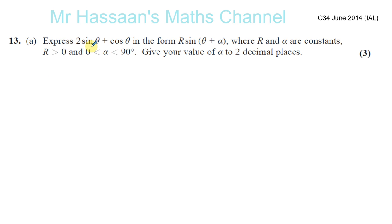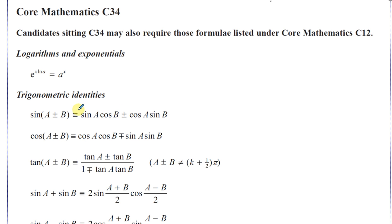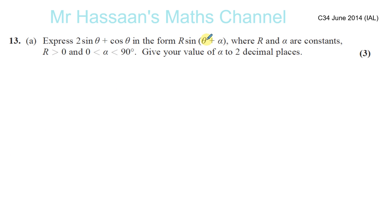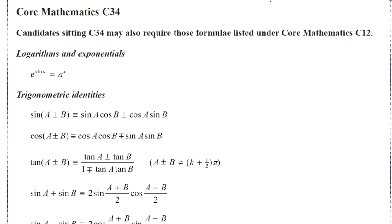Express 2 sine theta plus cosine theta in the form R sine(θ + α). Now, when you get a question like this, straight away you go to your identities. What we want to have is something with sine of an angle plus another angle — sine of an angle plus another angle. So we need to take that form here, which I will do.